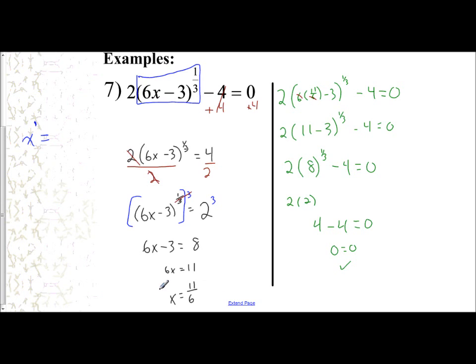And so x equals 11 sixths is a satisfactory answer for this rational exponent equation, this cube root equation. So the process, even though we're dealing with rational exponents, is the same. Isolate the object that contains the variable first by undoing any addition or subtraction around that object. Then you get rid of a coefficient. And to get rid of the rational exponent, you raise it to the reciprocal power on both sides, and then solve the expression from there.